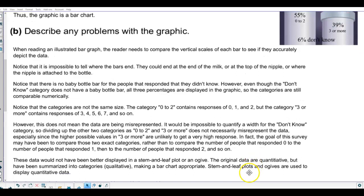These data would not have been better displayed in a stem and leaf plot or an ogive. The original data are quantitative, but have been summarized into categories, qualitative, making a bar chart appropriate. Stem and leaf plots and ogives are used to display quantitative data.